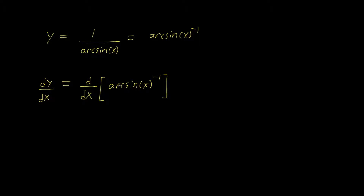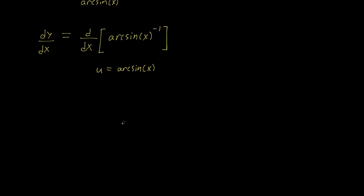We can use a u-substitution for arcsin(x) to make our job a little easier, because we can take the derivative of u to the negative 1. So let's say u equals arcsin(x). Now we have dy/dx equals d/dx of u to the negative 1.